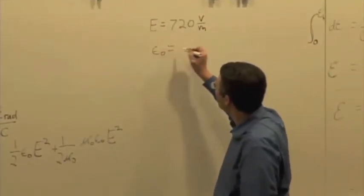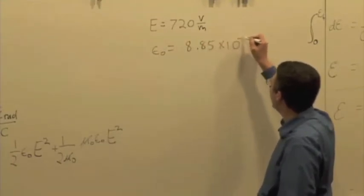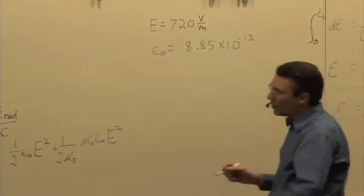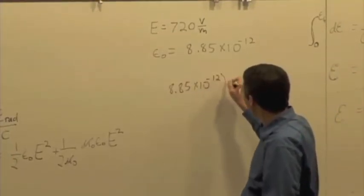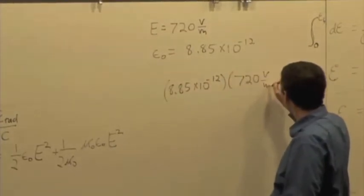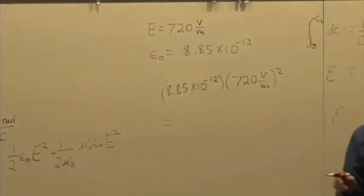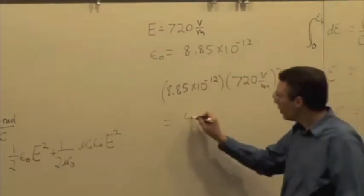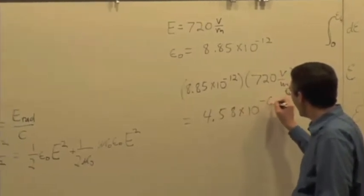What's epsilon 0? 8.85 times 10 to the negative 12. So if I say 8.85 times 10 to the minus 12 times 720 volts per meter squared, what's that number? What does that give me? Someone work it out.